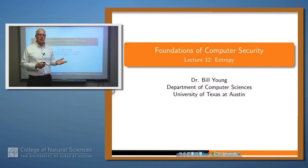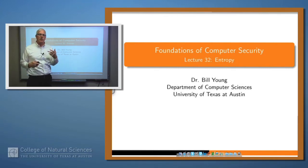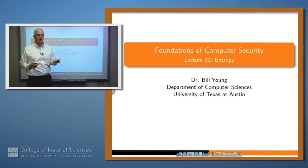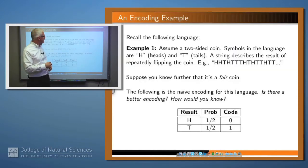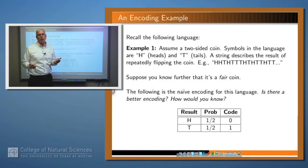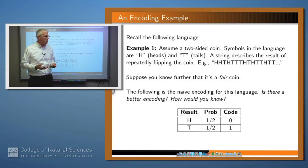Welcome back. In the last lecture we talked about the efficiency of encodings, and we said what you really want to do is encode most efficiently the symbols which are most probable in a language scenario. Today we're going to introduce a technical notion which attempts to capture that idea. So recall this language: we have a coin that we're flipping, and it's generating heads and tails, and we're thinking of that as a language, T's and H's or however you want to represent them.